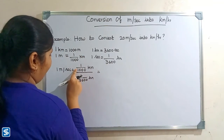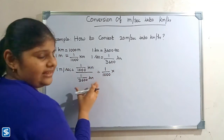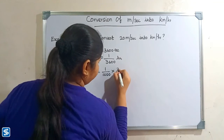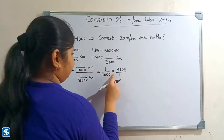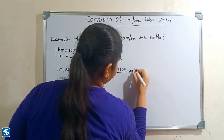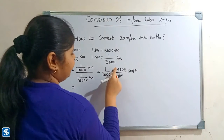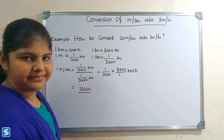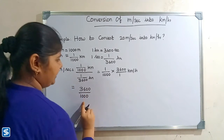So 1 by 1000 — multiply by the reciprocal of 1 by 3600, which will be 3600 by 1 — so 1 by 1000 multiply 3600 by 1 kilometer per hour. 1 multiply 3600 will be 3600, divided by 1000 multiply 1 will be 1000, so 3600 divided by 1000 kilometer per hour.